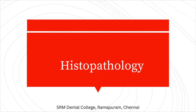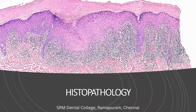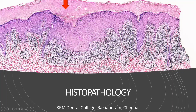Now we will discuss the histopathology of lichen planus in a stepwise manner. The initial finding is hyper-parakeratosis or hyper-orthokeratosis - basically hyperkeratosis, meaning the keratin layer is increased. Whether it is para or ortho depends on the type of epithelium: parakeratinized gives hyper-parakeratosis, orthokeratinized gives hyper-orthokeratosis.